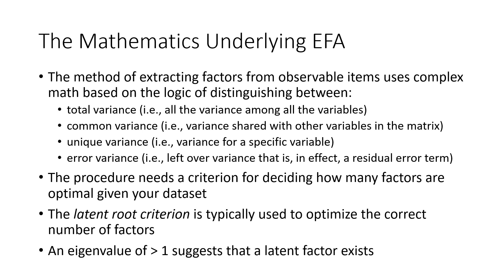To decide how many factors exist within our dataset, we use something called the latent root criterion. This optimizes the correct number of factors given your set of single-item observable indicators. We use a statistic called an eigenvalue to identify whether a latent factor exists. The way the eigenvalue works is straightforward: if the eigenvalue is greater than one, this suggests the existence of a factor.